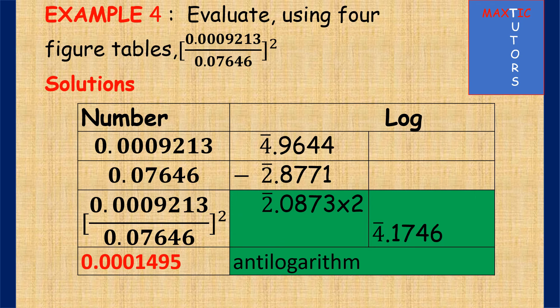Then the last slide there. You have to evaluate this using 4 figure table. So you have 4 zeros here, so you have bar 4 here. You have 2 zeros here, you have bar 2 here. And because of this division line, you are going to subtract after finding your 92 under 1 difference 3 which is 9644, and 76 under 4 difference 6 which is 8771.